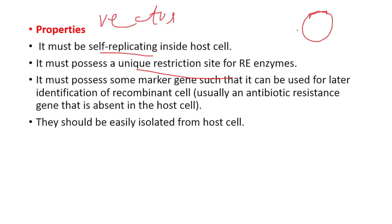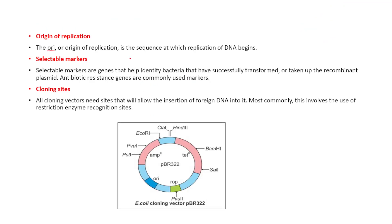Marker genes are used for identification of the recombinant cells. If we have any foreign DNA, we can insert it into a vector. We can identify them using a marker gene. We are using antibiotic resistance genes as markers. We can construct a vector.